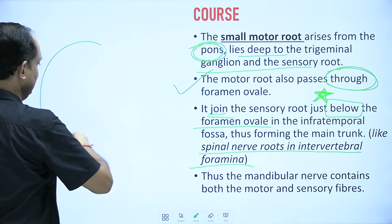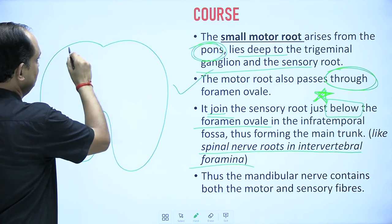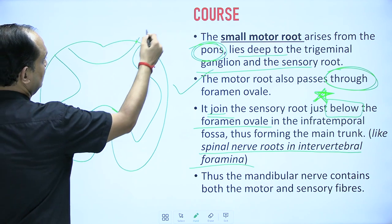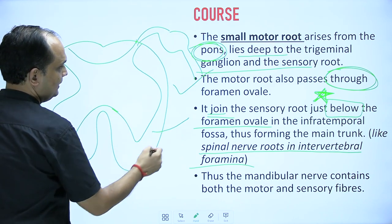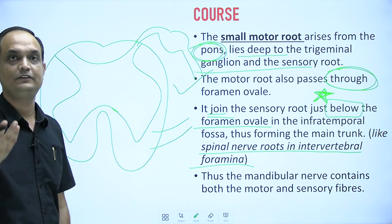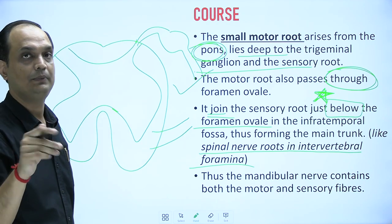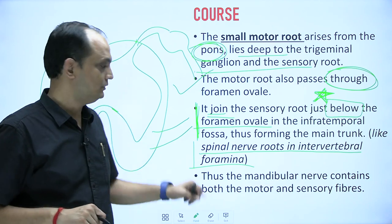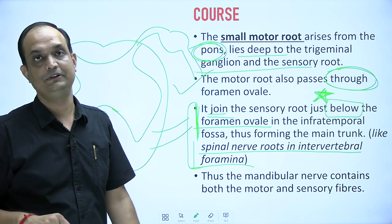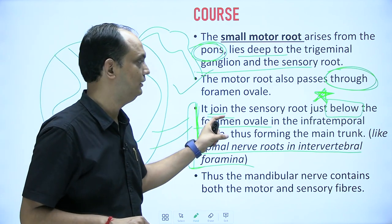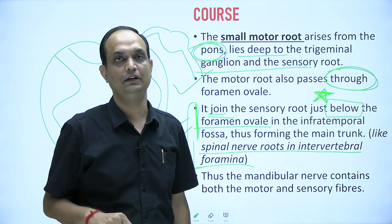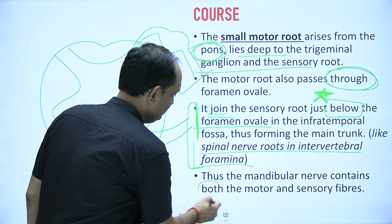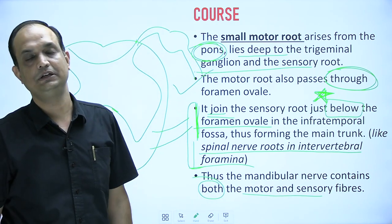This is analogous to the formation of a spinal nerve. When you look at a section of the spinal cord, there are two roots: the dorsal root and the ventral root, which join to form the spinal nerve at the intervertebral foramen. Similarly, the mandibular nerve trunk forms outside the foramen ovale. Thus the mandibular nerve trunk contains both motor and sensory fibers outside the foramen ovale.